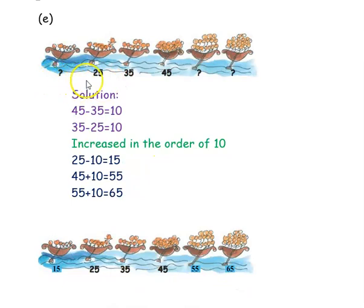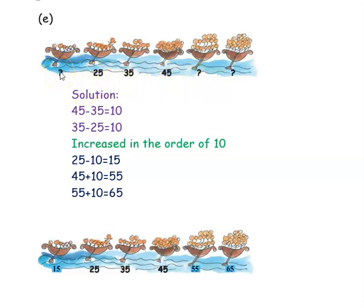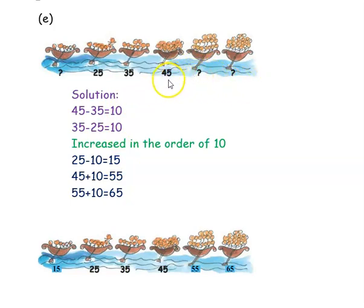The next pattern given is: blank, 25, 35, 45, blank, blank. They have given three numbers: 25, 35, 45. These are all in increasing order, increasing by 10 — because 25 plus 10 is 35, and 35 plus 10 is 45. For the first blank, since it comes before 25, we subtract 10 from 25 — so 25 minus 10 is 15. For the blank after 45, we add 10 — so 45 plus 10 is 55. And for the last blank, 55 plus 10 is 65. So the missing numbers are 15, 55, and 65.